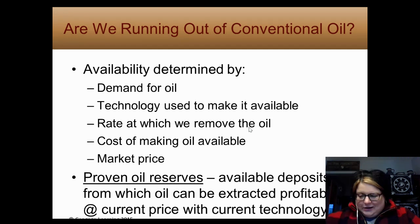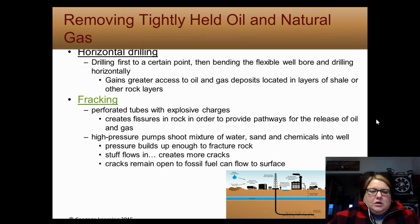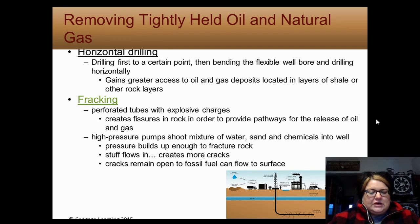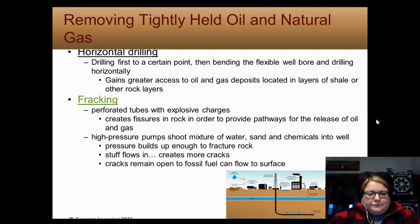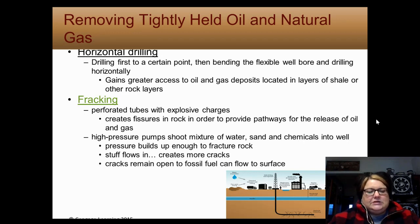Let's talk about horizontal drilling and fracking. With horizontal drilling, you first drill to a certain depth, then bend the flexible wellbore and go horizontal — you can get oil and natural gas this way. Fracking expands on this idea: you drill down, put explosives down there, set off the explosives to create fissures — tiny cracks — in the rocks. You then pump fracking liquid down, which is a mixture of water, sand, and chemicals that fractures the rock further, releasing petroleum and natural gas. This is a big thing in the US.